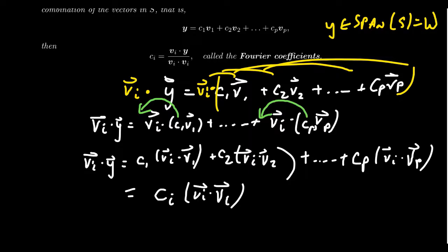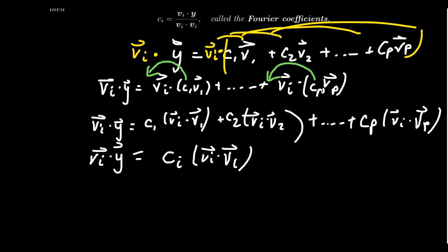Since it's an inner product, the inner product of a vector with itself is never going to equal zero. And so then we get VI dot Y. Divide both sides by VI dot VI.